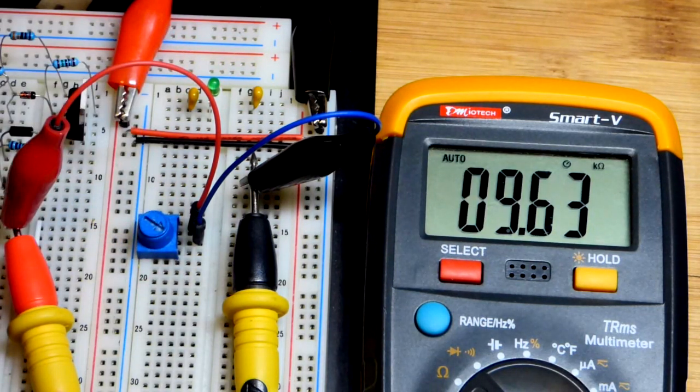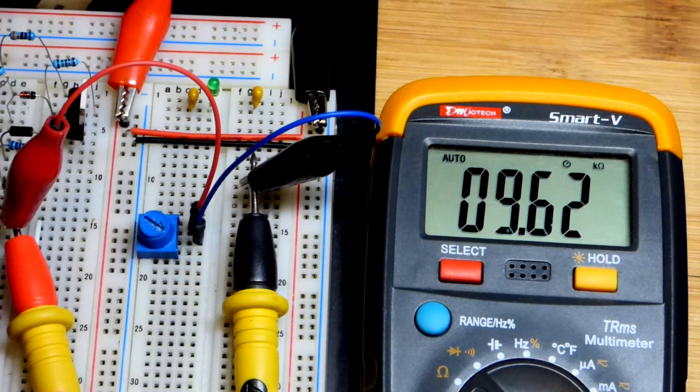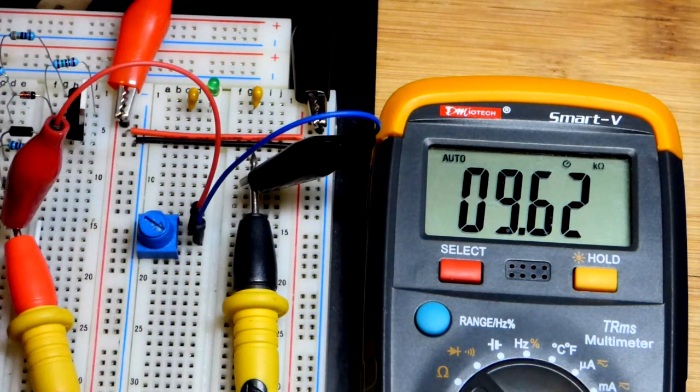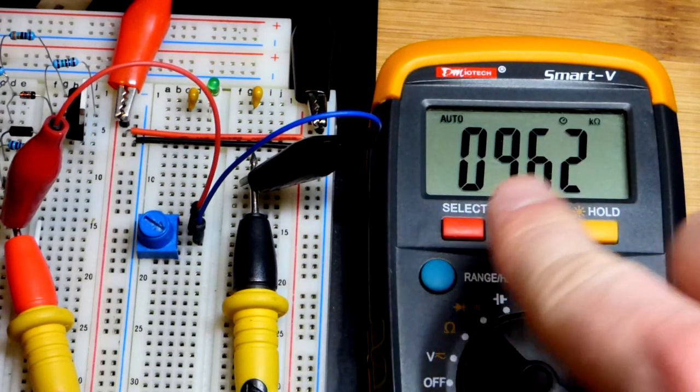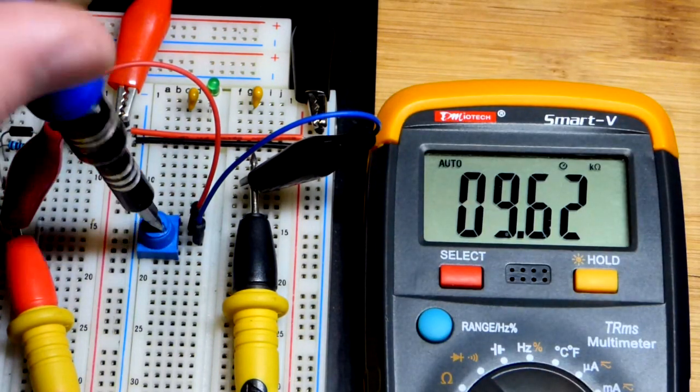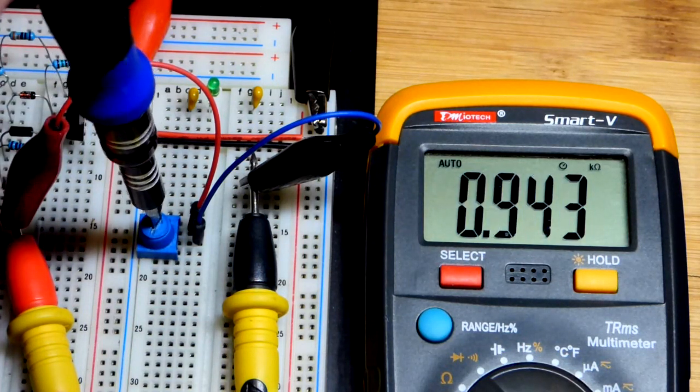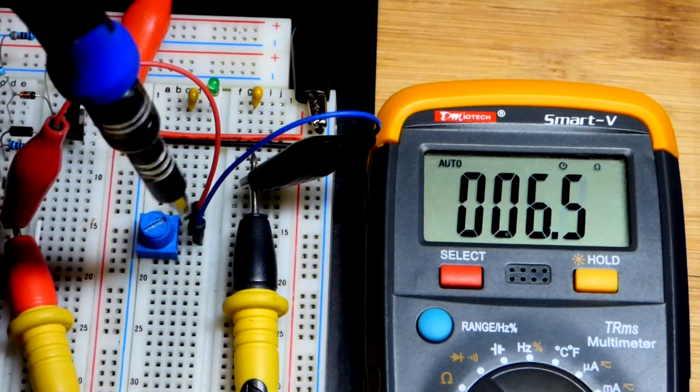And there you can see it's about 9,600 to be more accurate. This is an auto ranging meter. If you have a meter that has numbers on it, set it above 10,000 if it's a 10 kilo ohm trim pot that you're using.